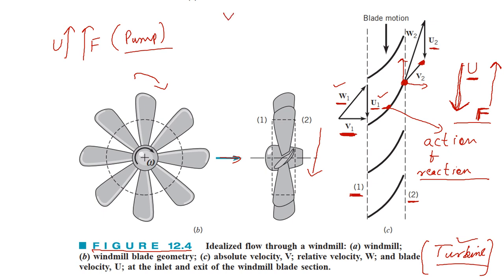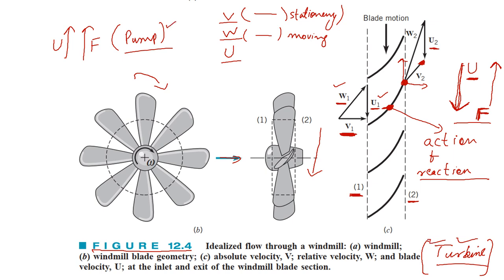To summarize: we differentiate between a pump and a turbine using velocity triangles. The absolute velocity V has a stationary reference; the relative velocity W has a moving reference attached to the blade; and U is the blade velocity. When the force changing the absolute velocity direction is in the same direction as blade motion, it is a pump. When they are in opposite directions, it is a turbine. This concludes the first introductory lecture on turbo machines — next we will discuss torques, momentum, and power.